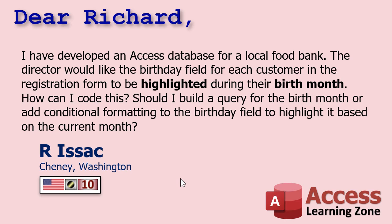Today's question comes from R. Isaac from Cheney, Washington. He's been a student of mine for 10 years — he's got his 10-year badge. He says: I've developed an Access database for a local food bank. The director would like the birthday field for each customer in the registration form to be highlighted during their birth month. How can I code this? Should I build a query for the birth month or add conditional formatting to the birthday field to highlight it based on the current month?